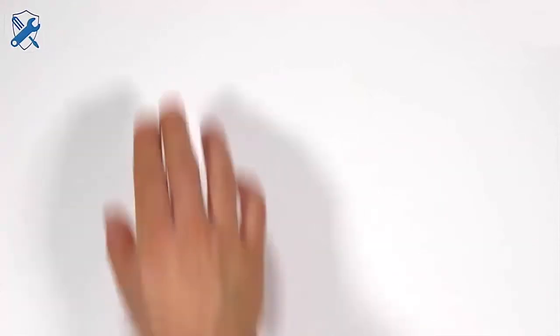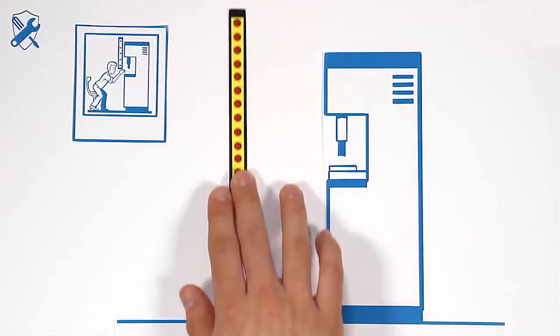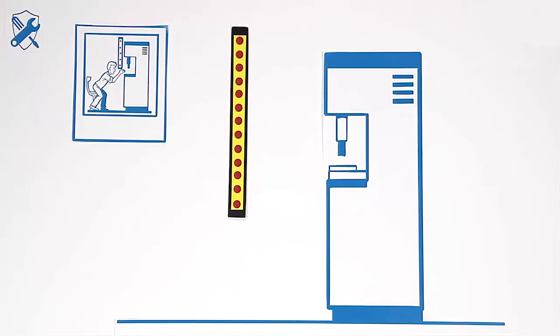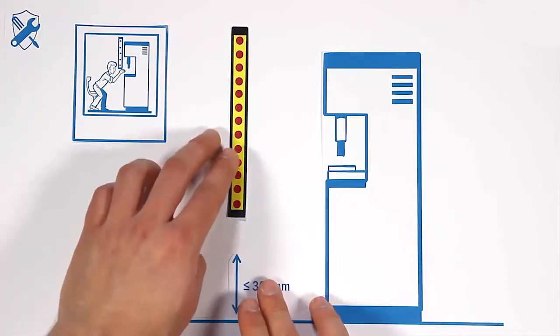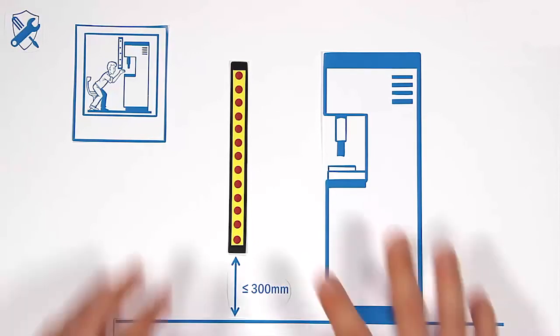In reaching under situations, crawling under the active optoelectronic protective devices has to be avoided. In case of access prevention, the maximum gap between the first beam and the floor shall be 300 mm max. Other distances from the floor underlie special requirements.